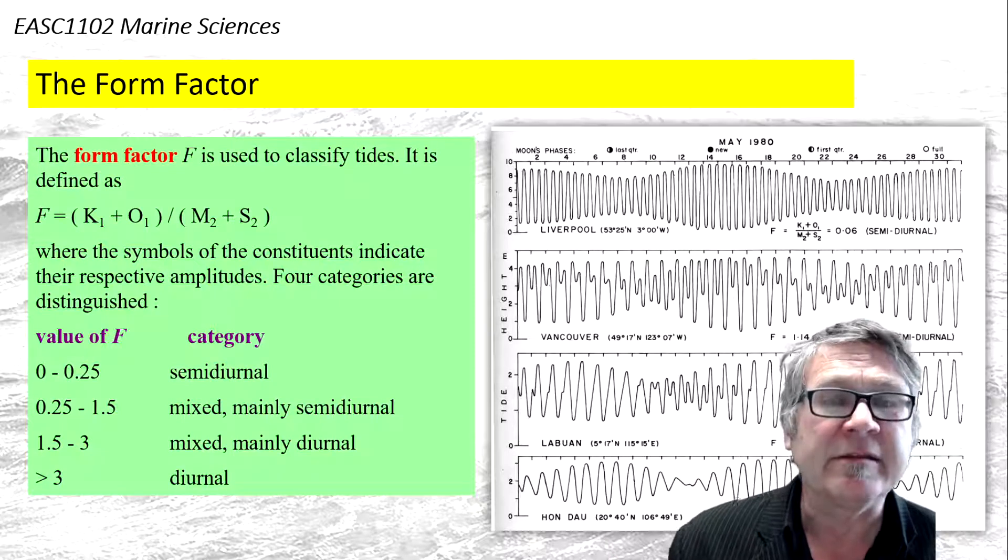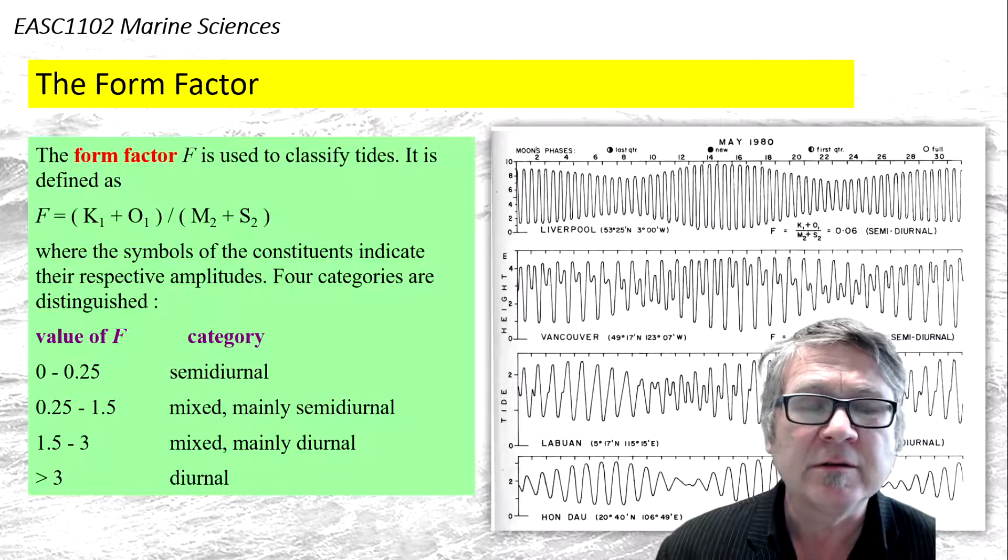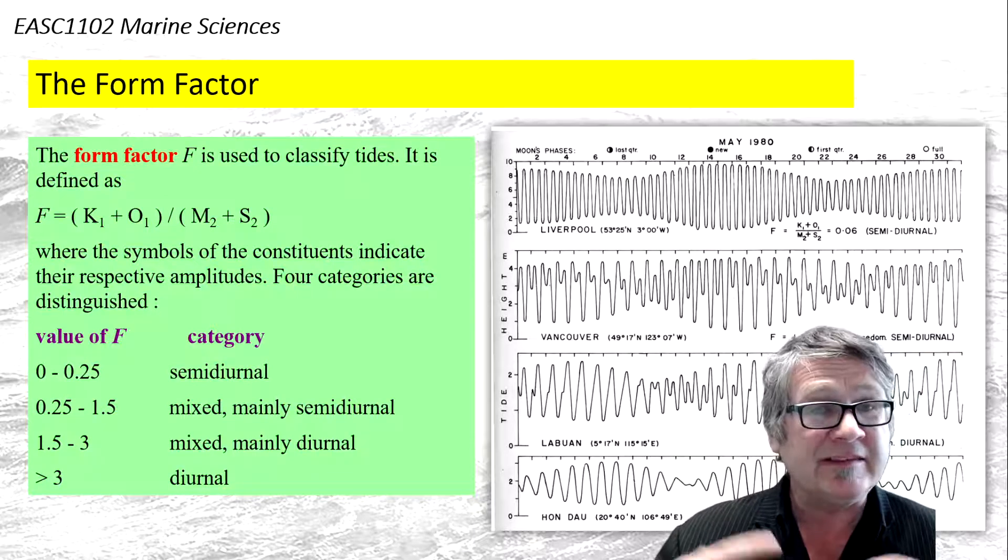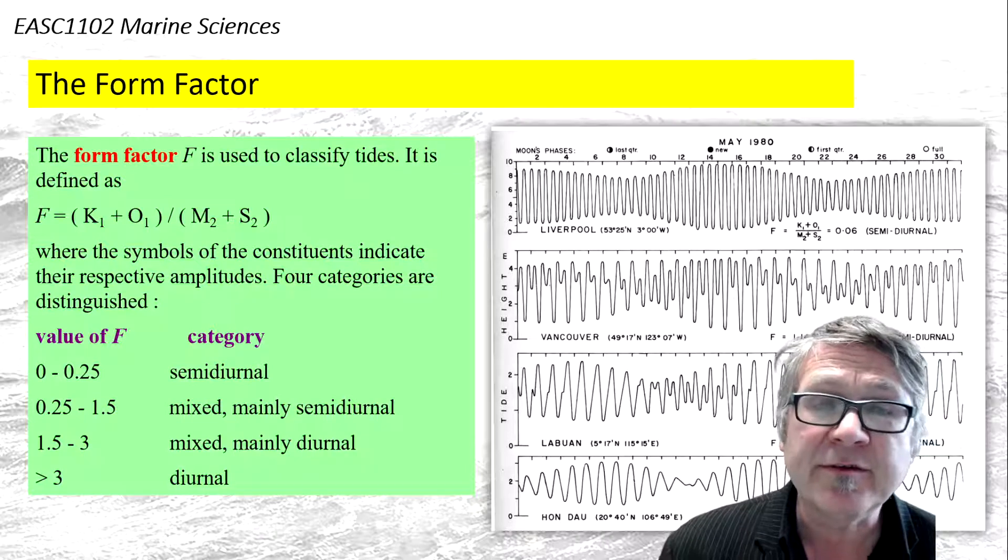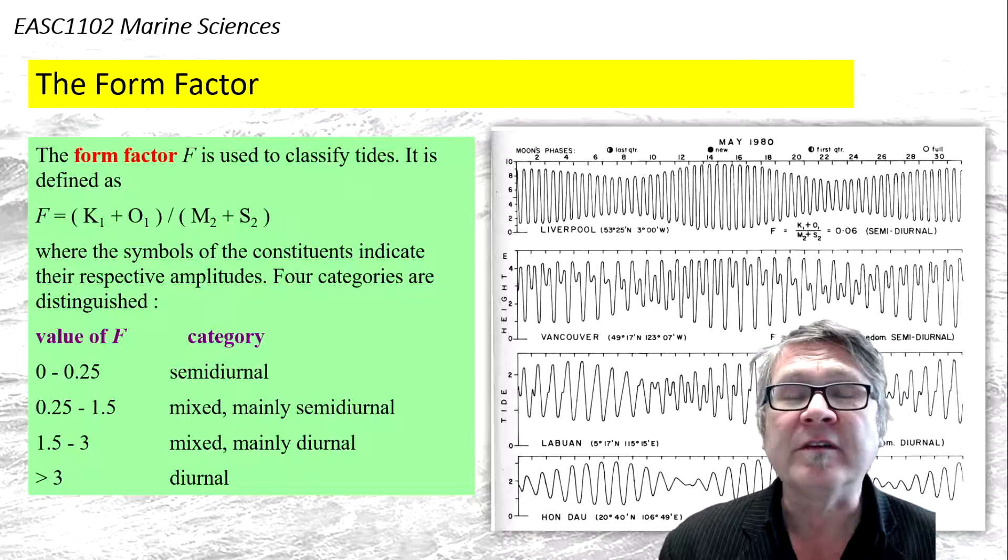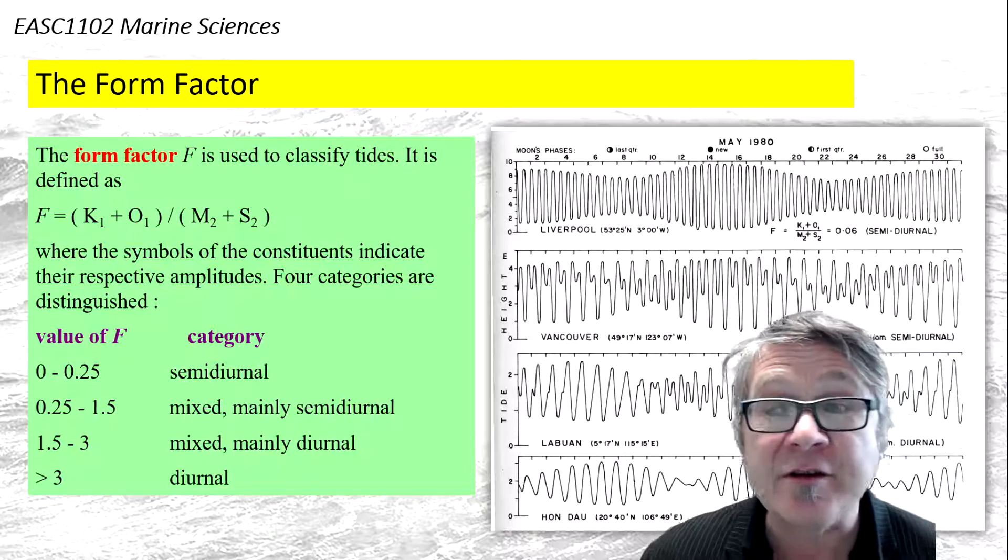So now the tides are different at different locations on Earth. They differ between semi-diurnal or diurnal periods, and they also differ in terms of the amplitude or the tidal range.